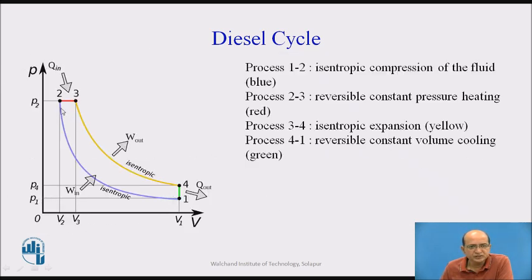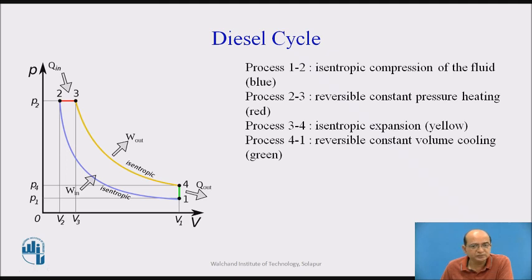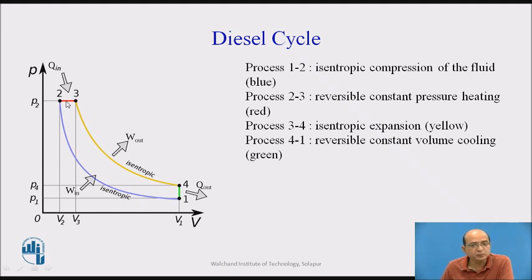The diesel engine P-V diagram is shown here. P indicates pressure on the y-axis, and V indicates volume on the x-axis. V2 is the clearance volume, V3 is the volume when fuel injection stops (the cutoff point at point 3), and V1 is the total volume. The two extreme piston positions — top dead center and bottom dead center — are indicated on the x-axis. Pressures P2 and P3 are the same because heat addition takes place at constant pressure from point 2 to 3.